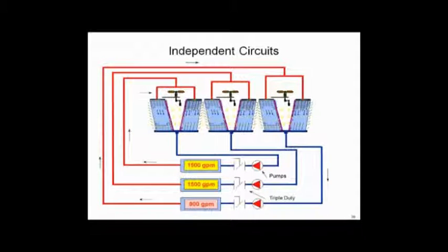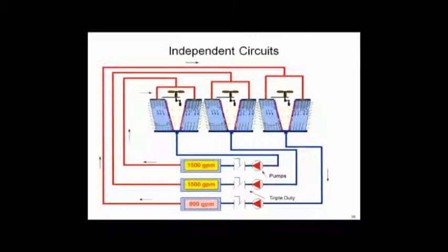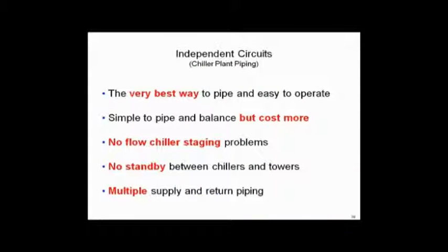In summary, this could be the very best way to pipe and easy to operate. Even Chris could operate that. If I stage on that little 900 GPM chiller in the wintertime, it's pretty easy. I just turn it on, turn the other two off. I got no problems. My flow rate's fixed. I'm not worried about minimum or max flows. Everything is easy. So it's easy to operate, simple to pipe and balance. But first cost is more. I have no flow staging issues when I stage chillers back and forth.